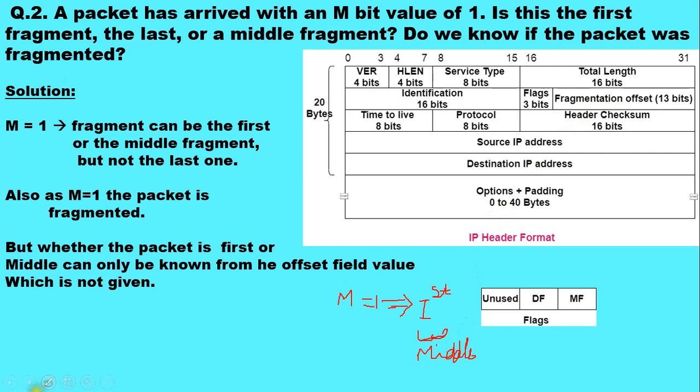So here in this case, the more fragment bit is set to 1 and the offset field value is not given to us. Fragmentation is obviously done because M bit is set to 1, but we are unable to identify whether the packet is the first fragment or the middle fragment as the offset field value is not given to us.